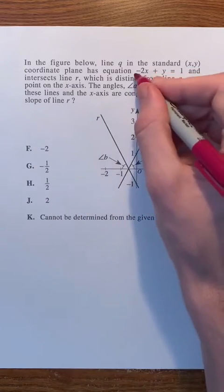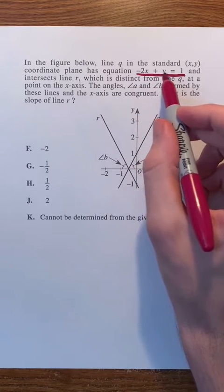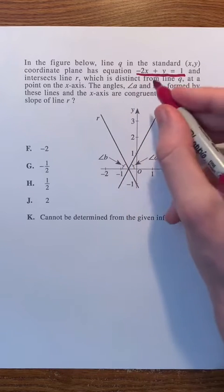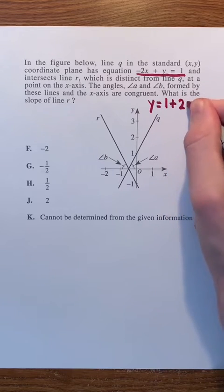Let's rewrite the equation of line q so that it will be in slope-intercept form. We're gonna do this by adding 2x to both sides of the equation. -2x + 2x is 0, so we're just gonna have y on the left side of the equation, and we'll have 1 + 2x on the right side of the equation.